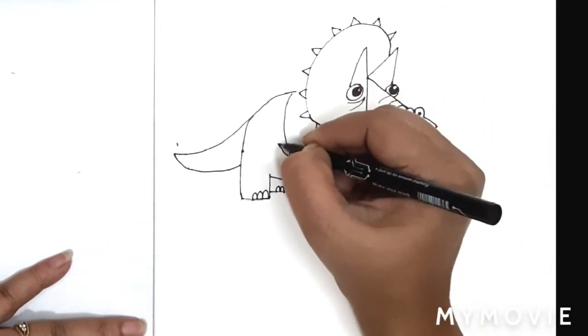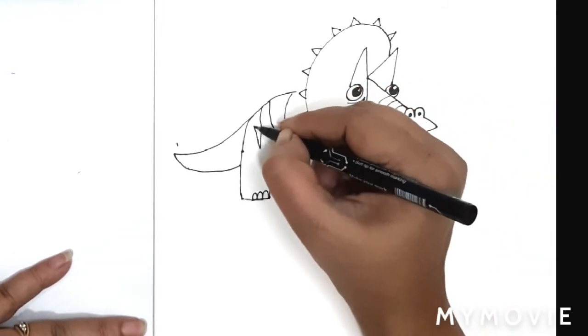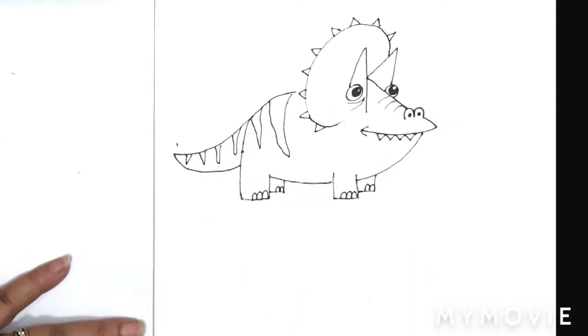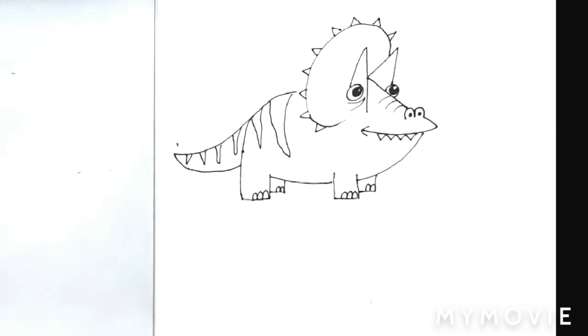Add some stripes to your dinosaur and your dinosaur drawing is done. You can add on some background and color your dinosaur according to your choice. Hope you all will enjoy this dinosaur series.